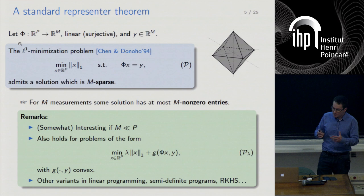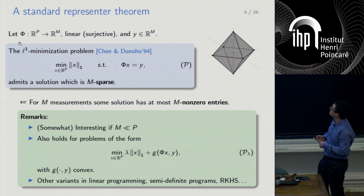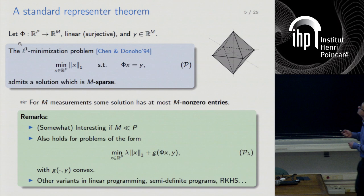What do we mean by a representer theorem? Consider a basic situation with m linear measurements where you want to solve an inverse problem using basis pursuit — finding the vector x with least L1 norm that provides the observations y. There is a folklore result in the literature saying there is a solution to this variational problem which is m-sparse when you have m measurements, meaning it has at most m non-zero entries.